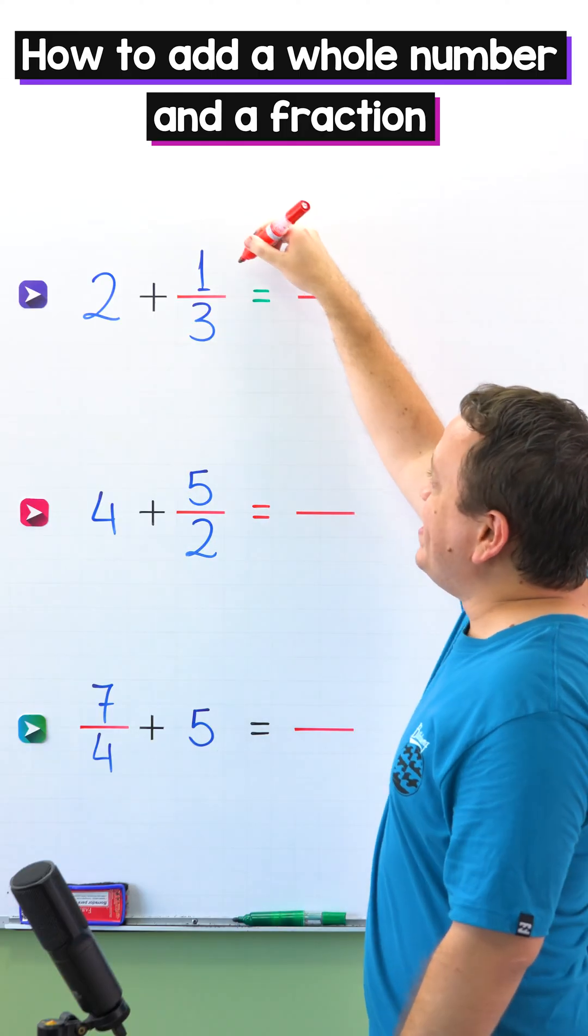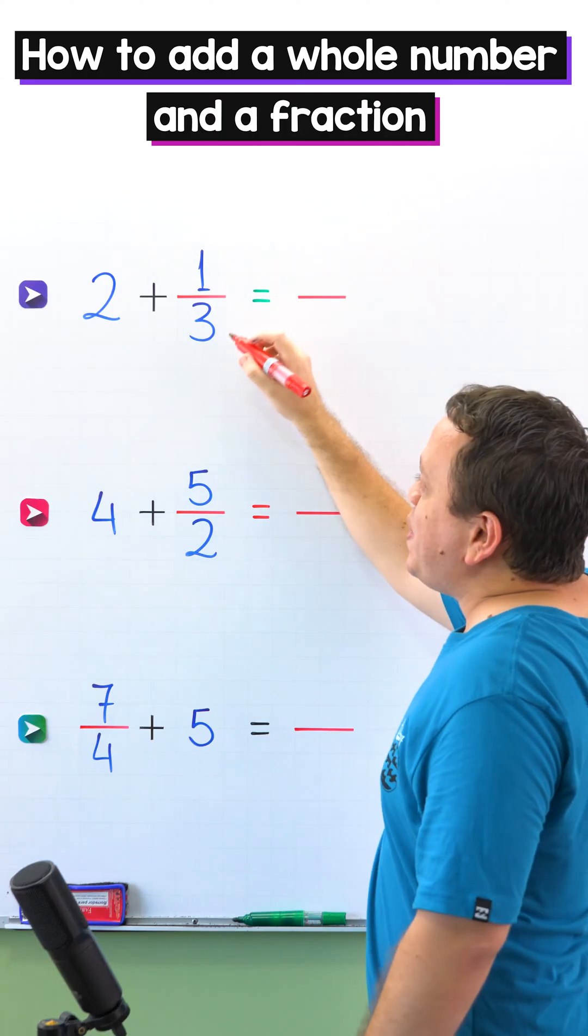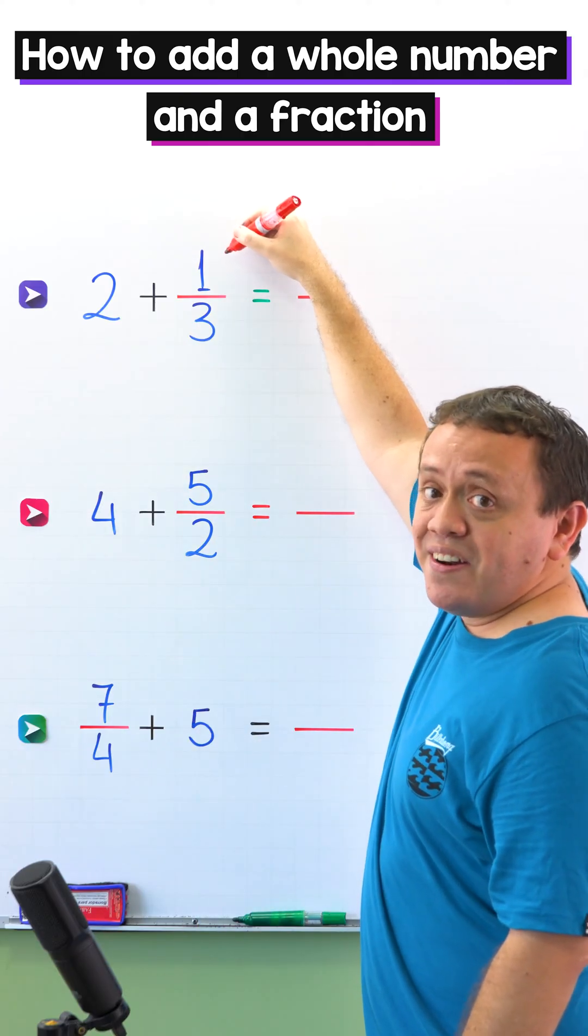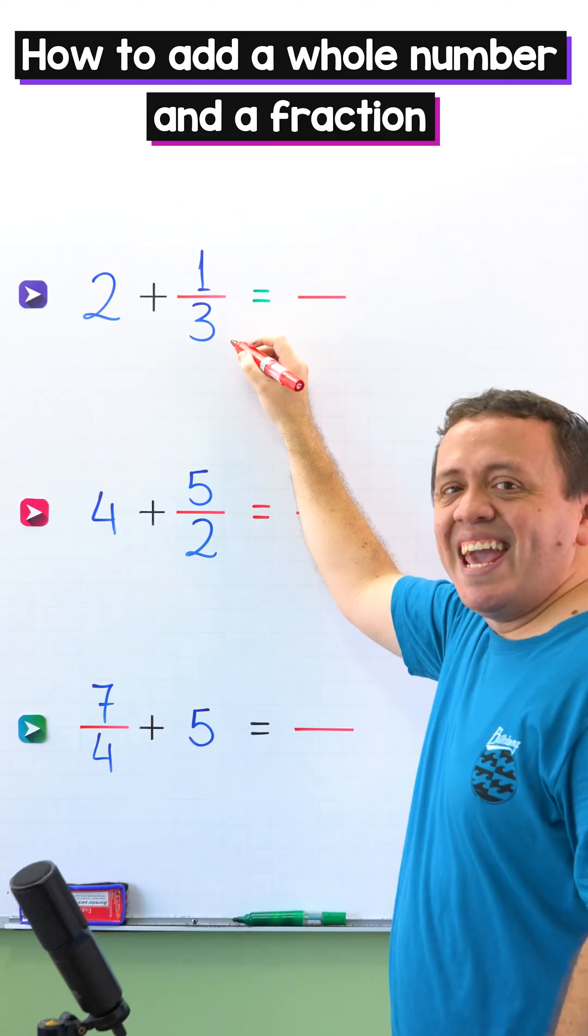In a fraction like this one, the top number is the numerator and the bottom number is the denominator. Once again, the top number is the numerator and the bottom number is the denominator. Nice!